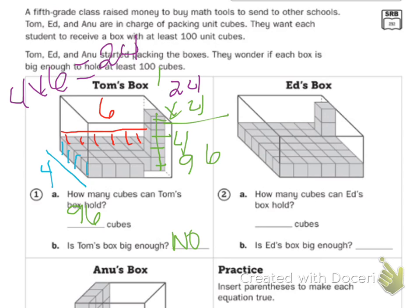Ed's box. You want to count the cubes at the bottom, or remember, we can multiply width and length. So, 1, 2, 3, 4, 5, 6. So, 1, 2, 3, 4, 5, 6. So, 6 times 6 is 36.